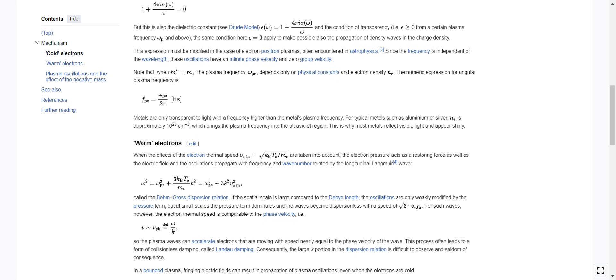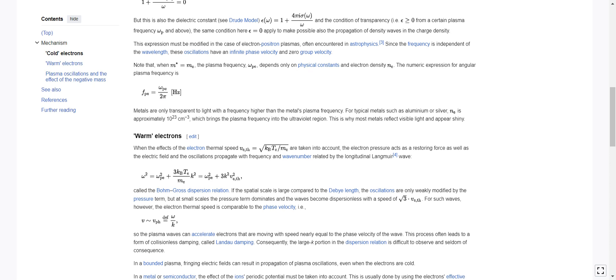Note that when m star equals m sub e, the plasma frequency omega sub p e depends only on physical constants and electron density n sub e. The numeric expression for angular plasma frequency is f sub p e. So this is frequency in f, in hertz, not in omega. This is just a simple conversion, f equals omega over 2 pi.